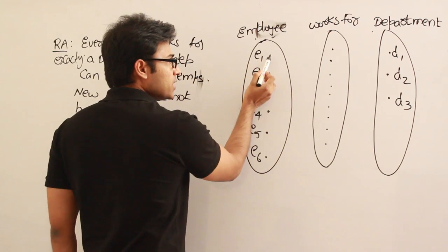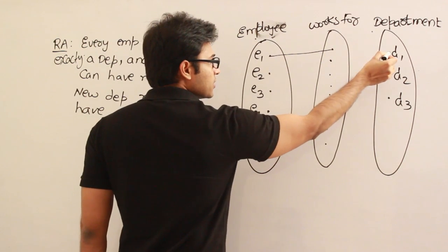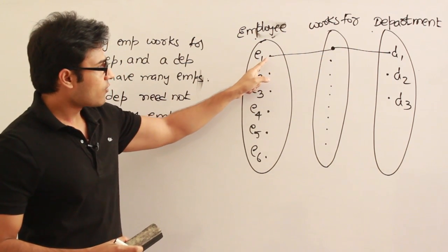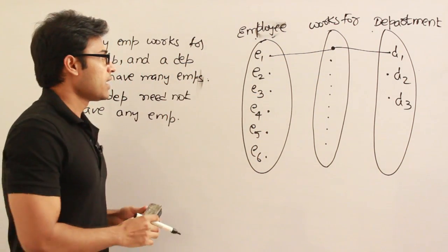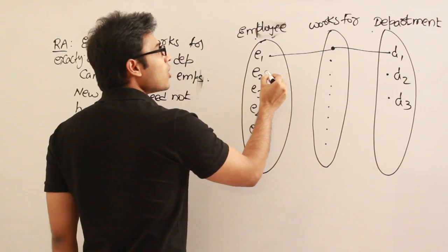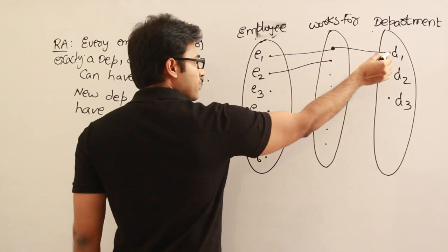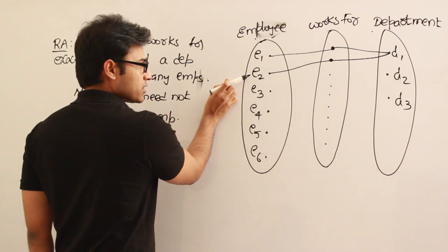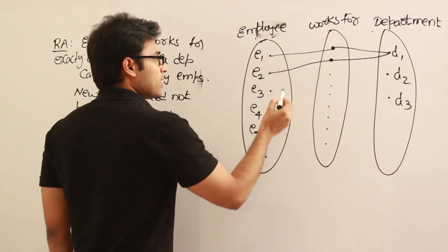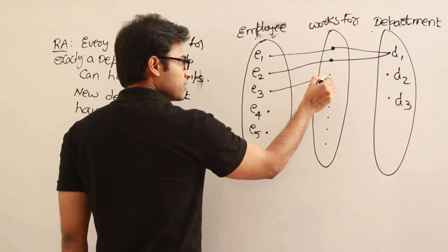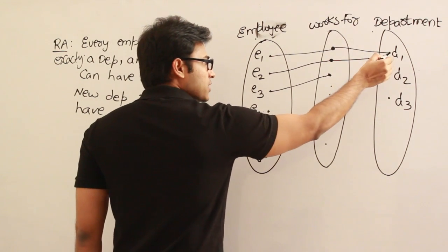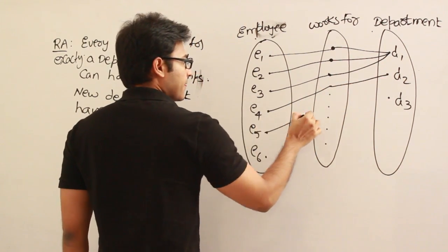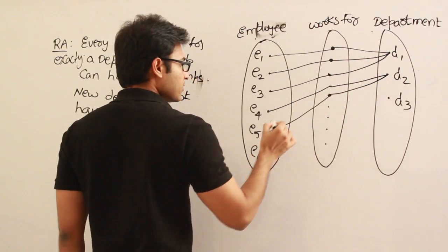If employee E1 works for department D1, we join these two in the relationship type. This relationship is a combination of one entity from the employee set and one entity from the department set. Similarly, if E2 also works for D1, then E2 and D1 are combined. If E3 also works for D1, one more relationship is formed. In the same way, if multiple employees work for D2, we combine them.